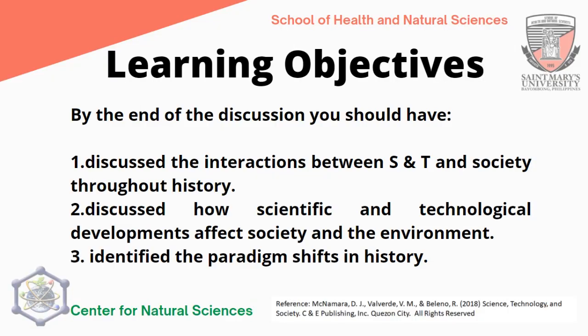By the end of the discussion, you should have first discussed the interactions between science and technology and society throughout history, discussed how scientific and technological developments affect society and the environment, and lastly, identified the paradigm shifts in history.